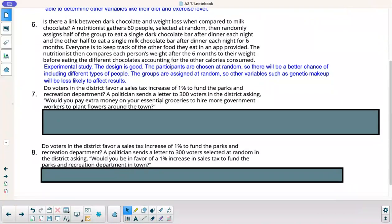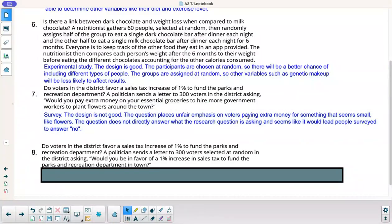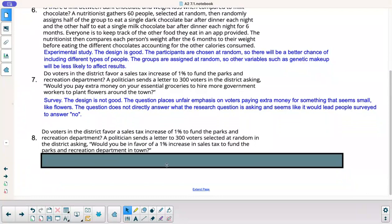All right. Number seven. Do voters in the district favor a sales tax increase of 1% to fund the parks and recreation department? A politician sends a letter to 300 voters in the district asking, would you pay extra money on your essential groceries to hire more government workers to plant flowers around the town? Okay. This is a survey. Not a good design. The question places unfair emphasis on voters for paying extra money for something that seems small, like flowers. The question does not directly answer what the research question is asking. It doesn't say anything about parks and recreation department. It's just not going to answer the question that you're seeking.